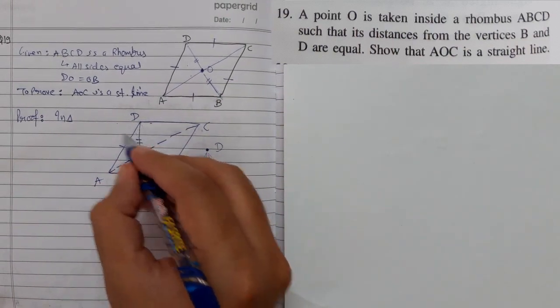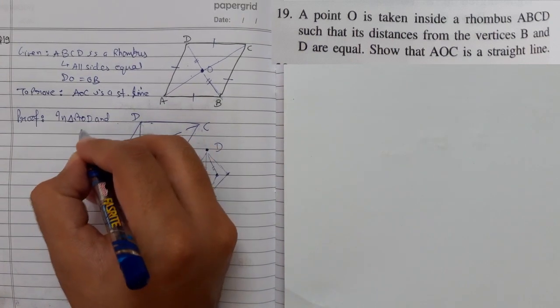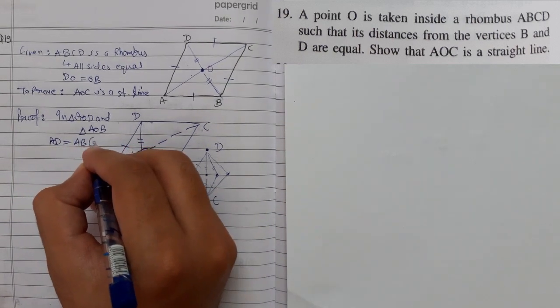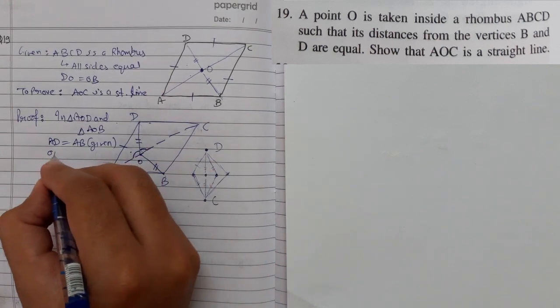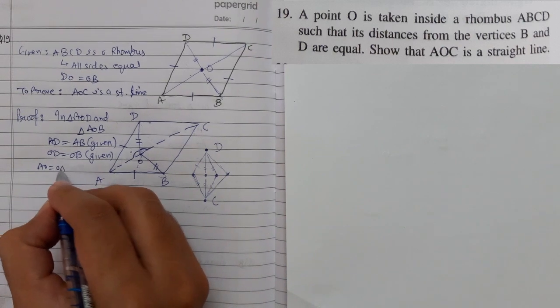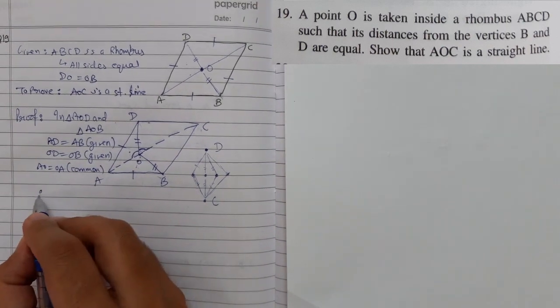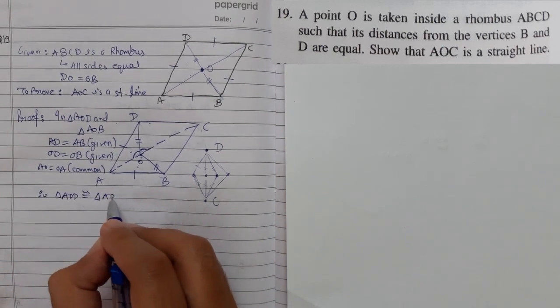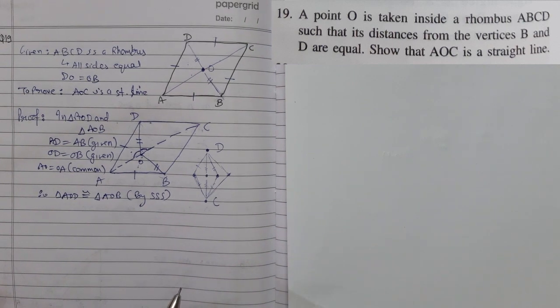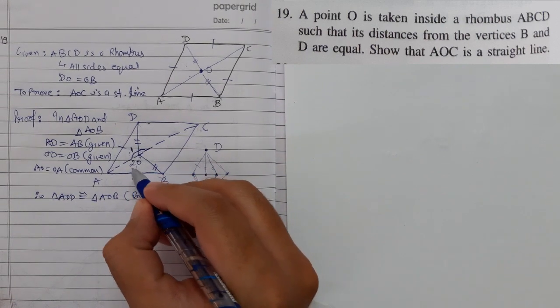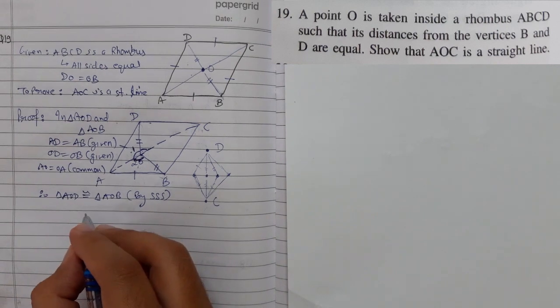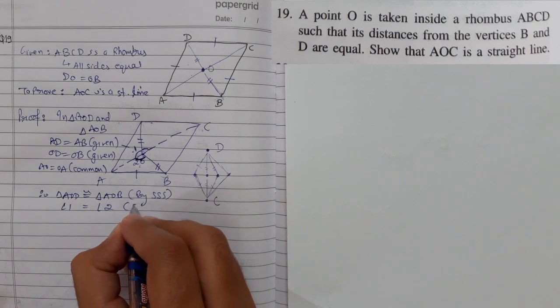In triangle AOD and triangle AOB, first thing is AD is equal to AB given. Second thing is OD equals to OB which is also given. Third thing is AO equals to AO common. Therefore triangle AOD is congruent to triangle AOB by SSS congruency criteria. So we know that this angle is also equal to this angle. So angle 1 is equal to angle 2 by CPCT.